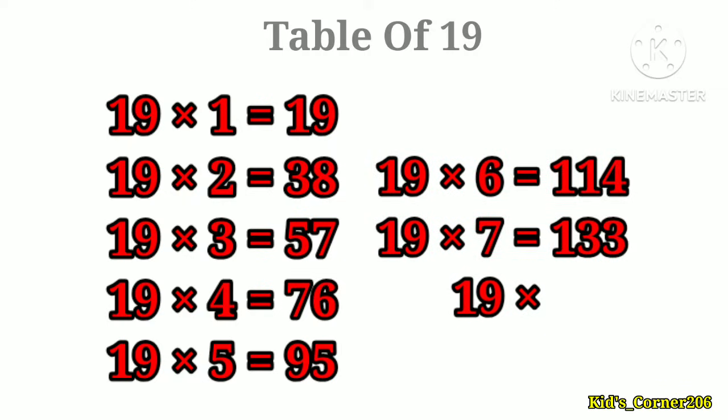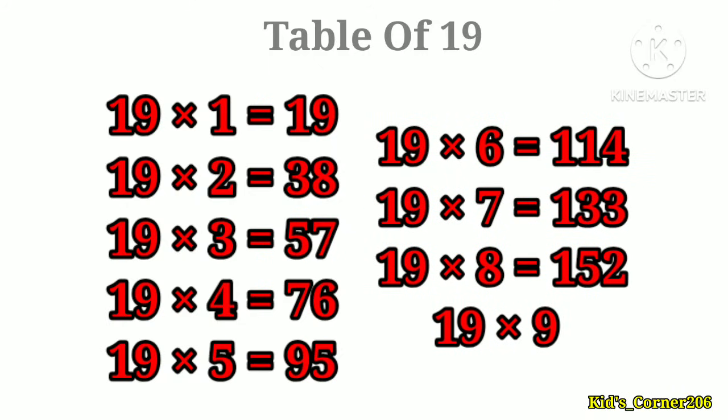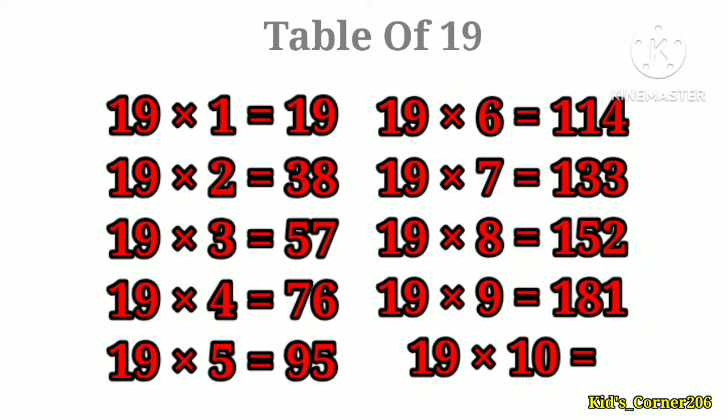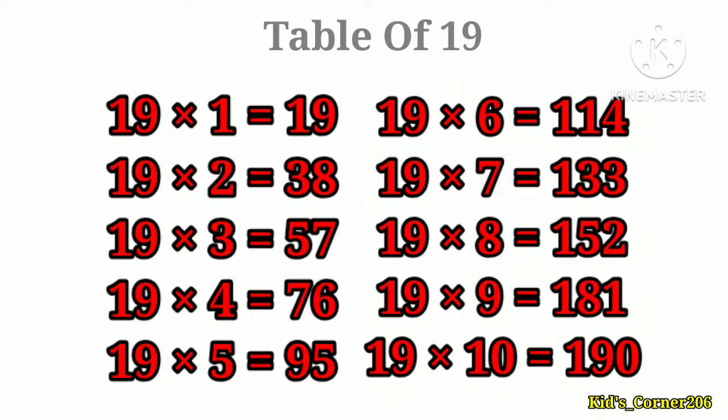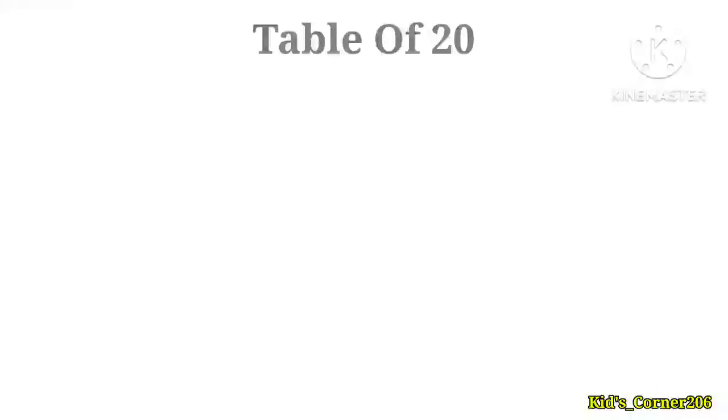19 sixes are 114, 19 sevens are 133, 19 eights are 152, 19 nines are 181, 19 tens are 190. Table of 20. 20 ones are 20.